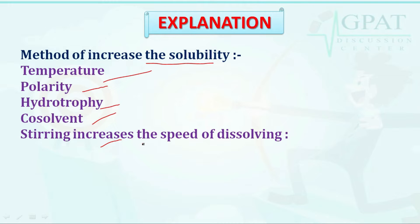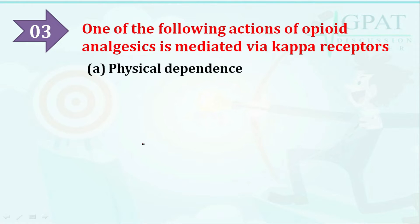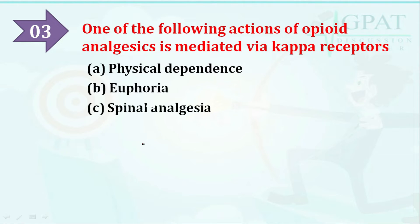The next question: which of the following actions of opioid analgesic is mediated via kappa receptors? Options are: option A: physical dependence, option B: euphoria, option C: spinal analgesia, option D: both A and C. The correct answer is both A and C — physical dependence and spinal analgesia.